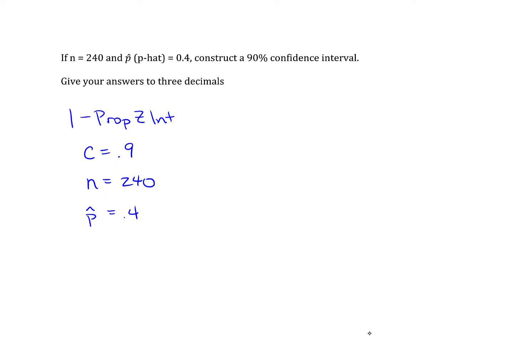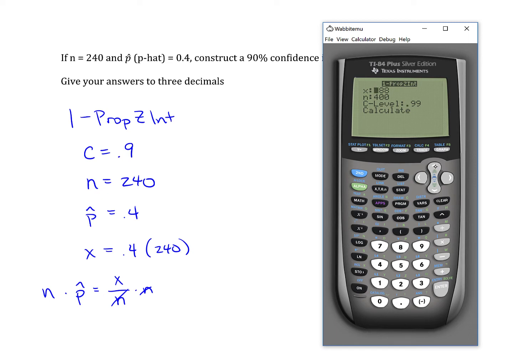So p-hat is the proportion out of the sample that favors the event. So x is going to be that proportion of how many items you have in the sample. Another way to look at that is p-hat is x divided by n. So if you solve for x, you can multiply both sides by n. So if you just multiply n times p-hat, that'll give you x. In this case, you can do it right here in the calculator function. So 0.4 times 240, that is 96.